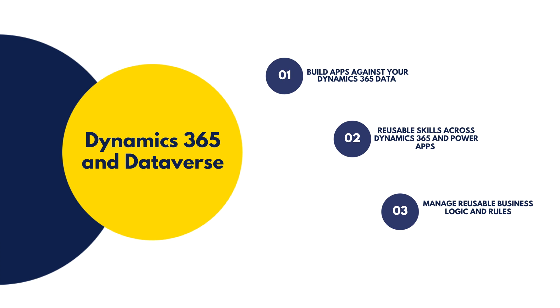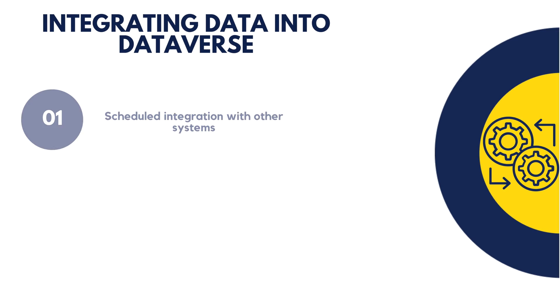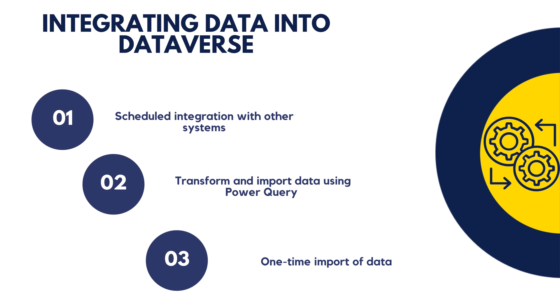Next we are going to discuss integrating data into Dataverse. Whenever you have data from different sources, you can integrate that into Dataverse. Building an app typically involves data from more than one source. Although this can sometimes be done at the application level, there are cases where integrating this data into a common store allows for an easier app-building experience and a single set of logic to maintain. Dataverse allows data to be integrated from multiple sources into a single store, which can then be used in Power Apps, Power Automate, Power BI, or Power Virtual Agents, along with data already available from Dynamics 365 applications.